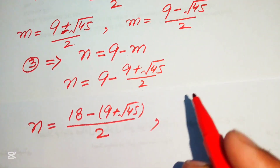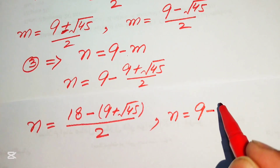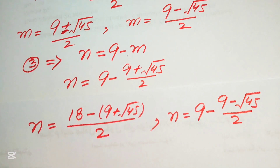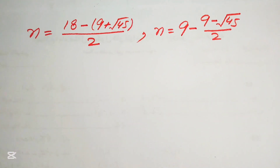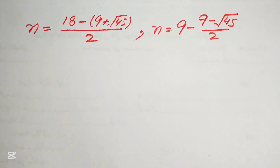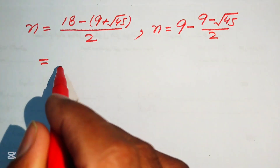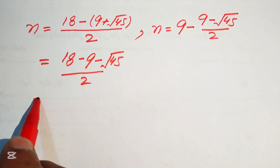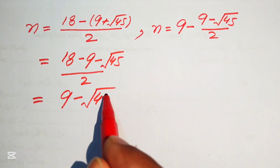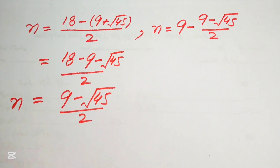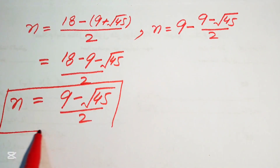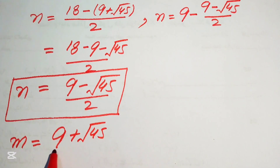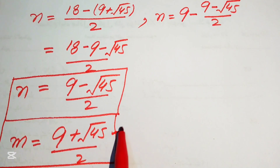Now we substitute the second value of m, which is (9 minus square root of 45) divided by 2, into n equals 9 minus m. We multiply the negative sign through both terms in the numerator and get 18 minus 9 plus square root of 45, all divided by 2, giving n equals (9 plus square root of 45) divided by 2.